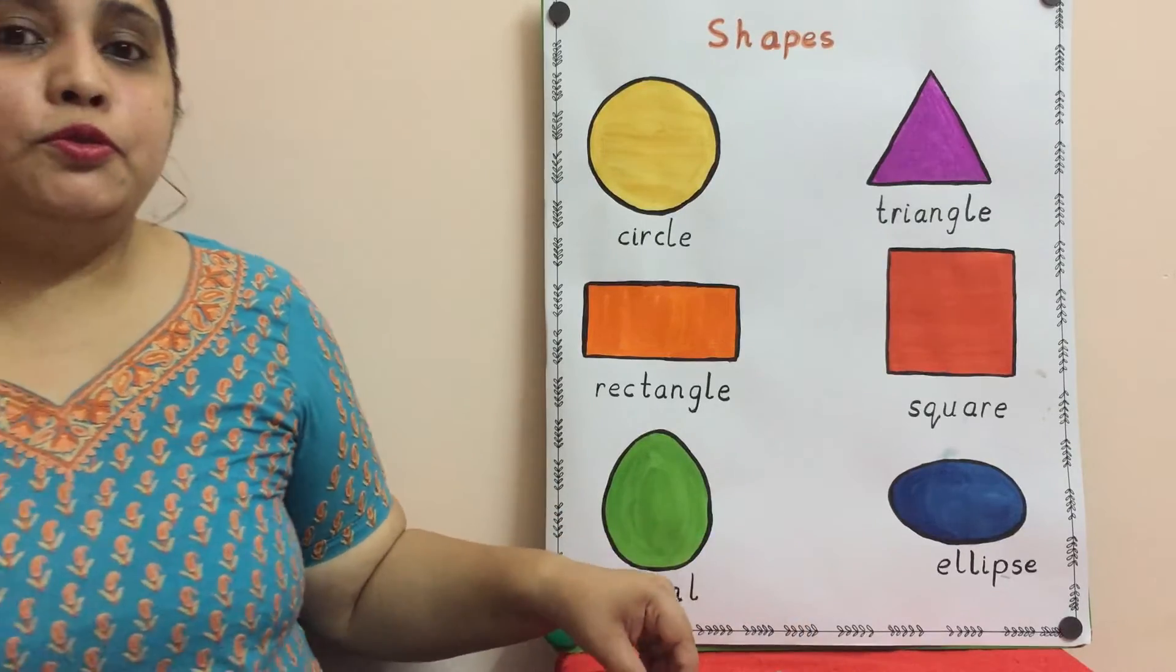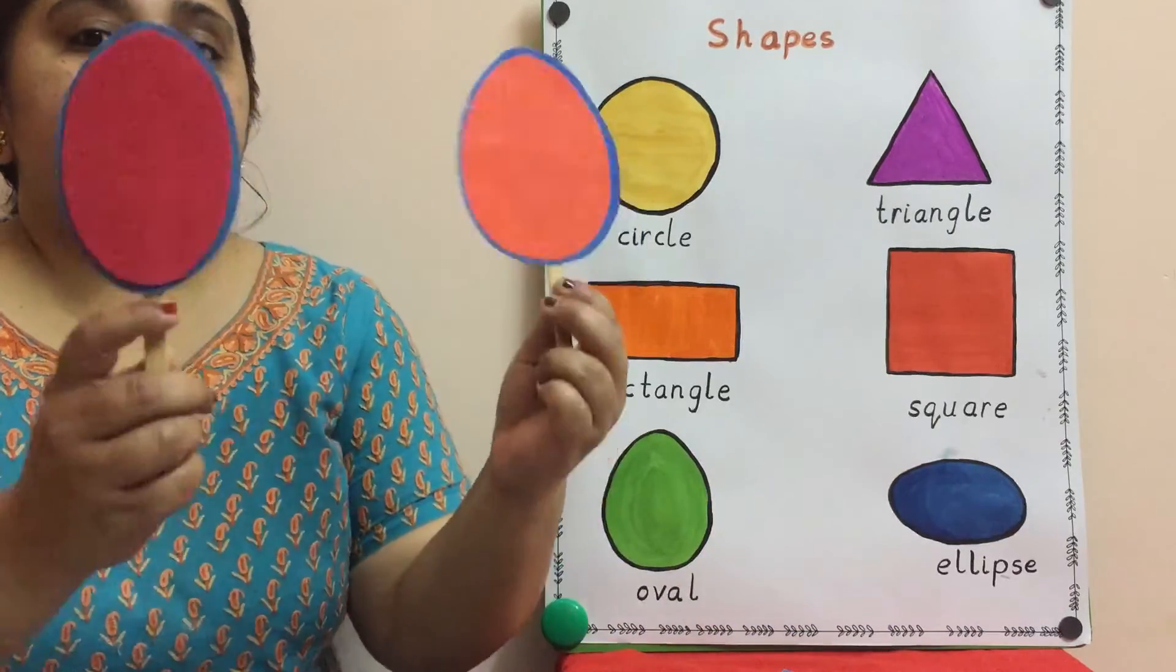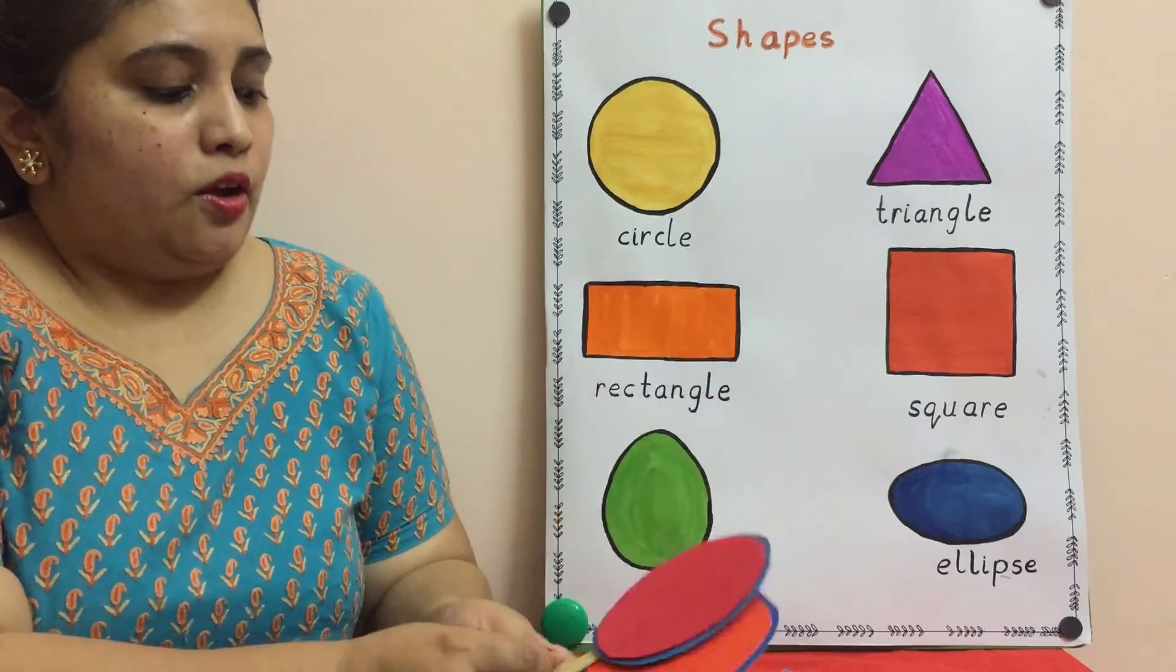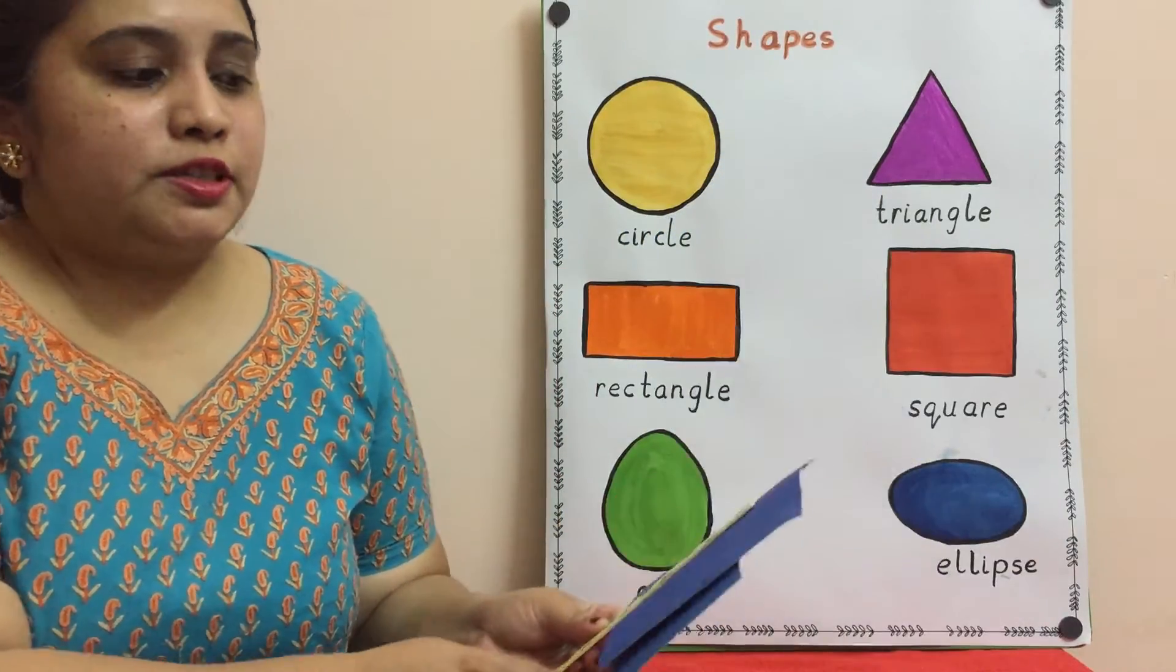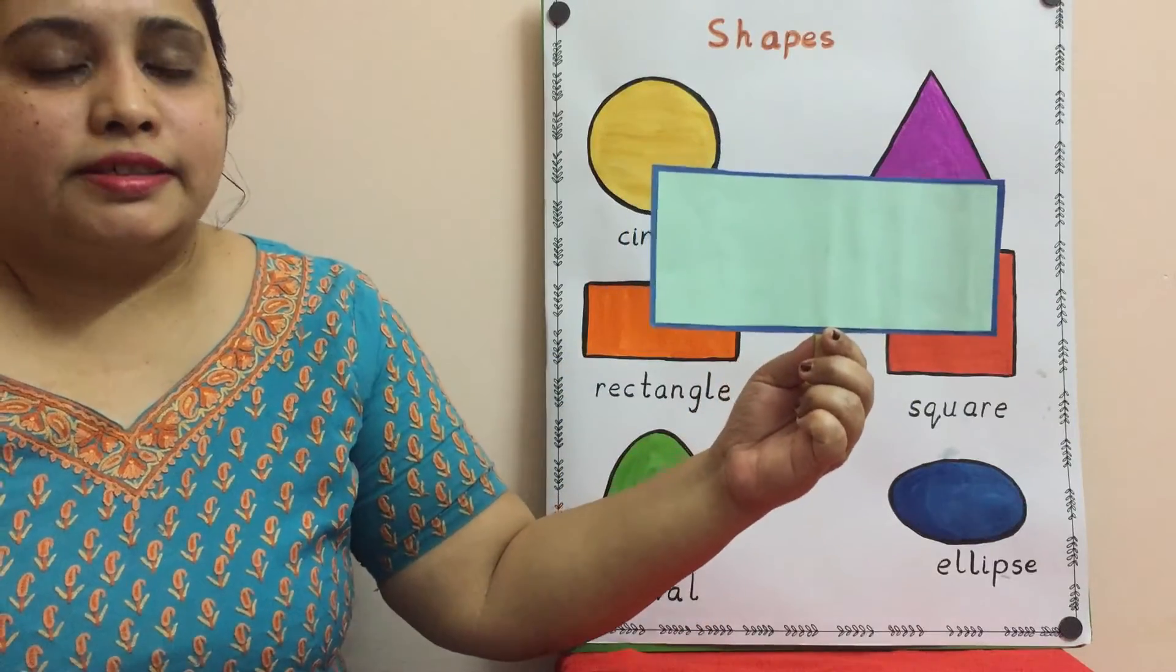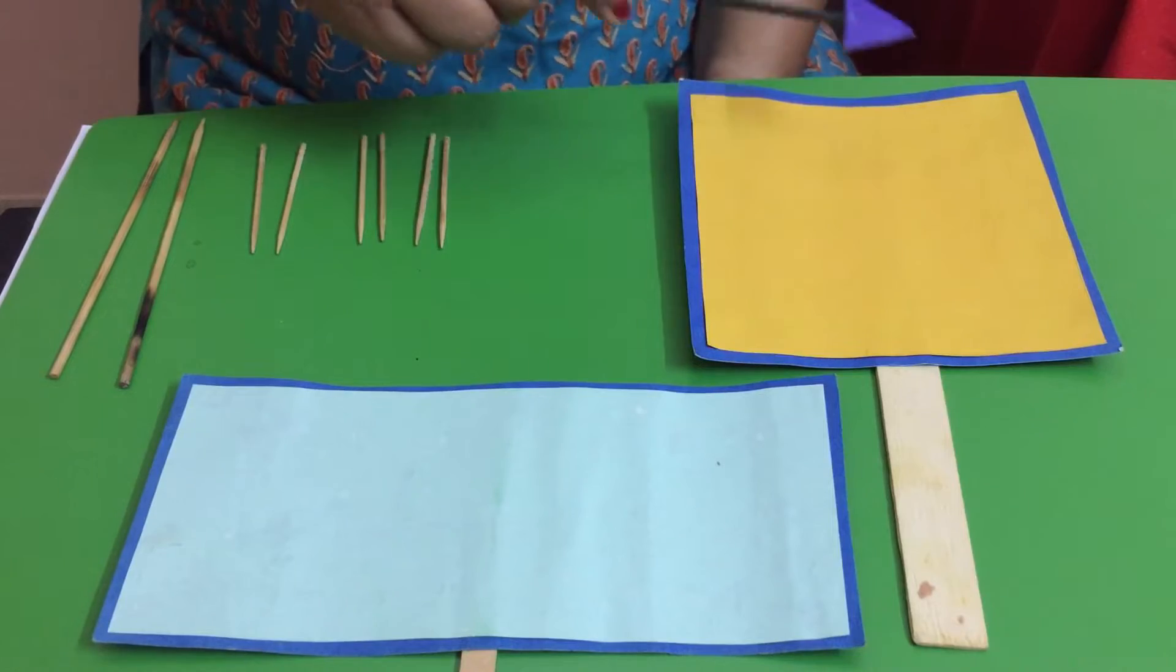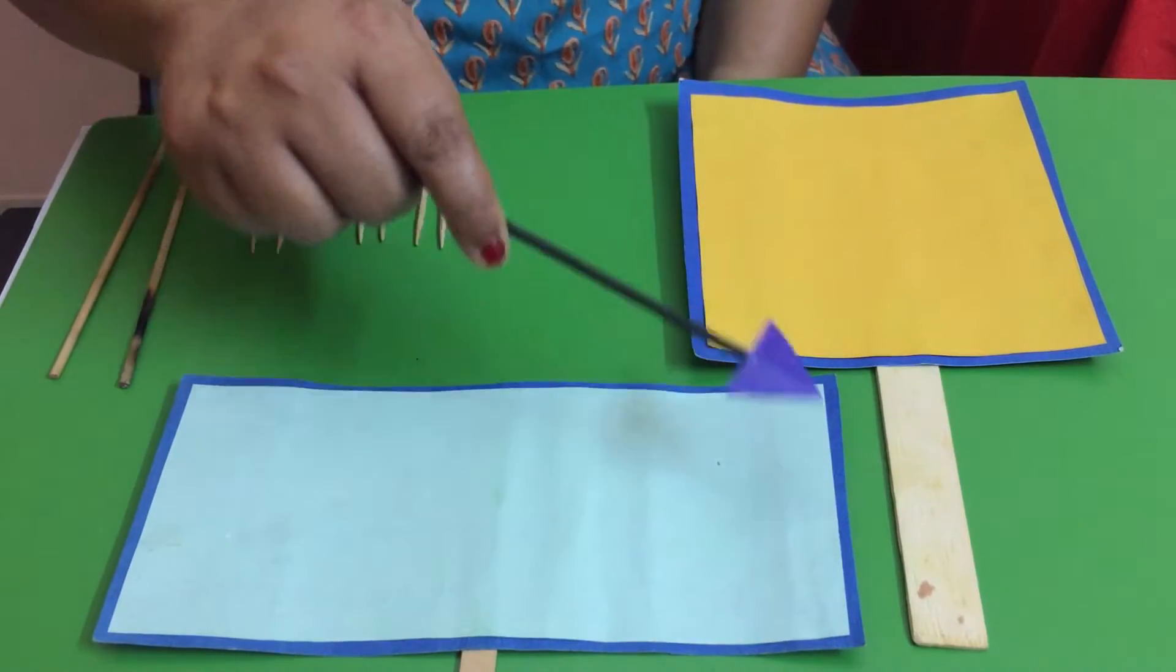So today we are going to know the difference between an oval and ellipse, and also find out the difference between a rectangle and square. So children, this is a square and this is rectangle.